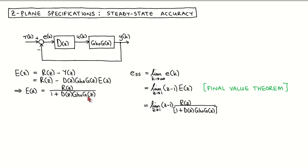We can now use the final value theorem to write the steady-state value of the error signal, which is the limit as k tends to infinity of signal E, as the limit as Z tends to 1 of Z minus 1 times E(Z). We now use the expression we obtained to write the steady-state value of the error signal. This result is valid for any reference input and any loop transfer function, but without knowing the signal and the transfer function, we cannot say much about the steady-state value. For this reason, we look at three specific reference input signals and analyze the steady-state accuracy for each of them.